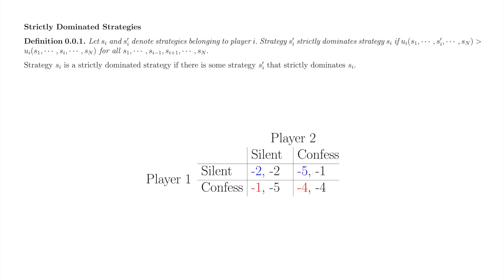If player II confesses, player I's payoff from confess, minus 4, is strictly greater than player I's payoff from silent, minus 5. Regardless of player II's strategy, player I's payoff from confess is strictly greater than player I's payoff from silent. Confess strictly dominates silent — i.e., silent is a strictly dominated strategy.